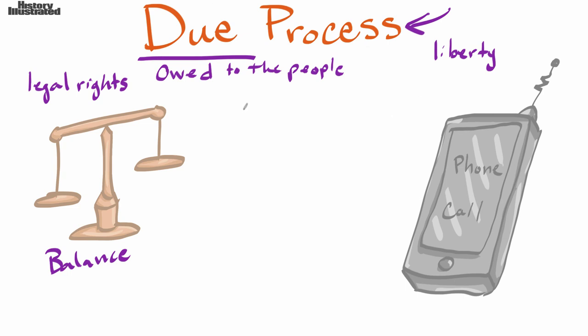They also owe you other things like a trial. For example, if you're ever arrested and accused of a crime, you have the right to a trial. You also have the right to a jury instead of a judge just telling you that you did it. You have the right of a jury deciding if you did it or not. All of these things that are owed to you by the government to protect your legal rights are called due process.